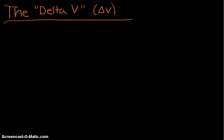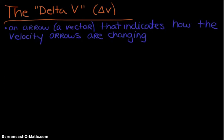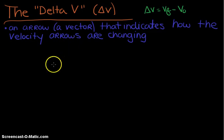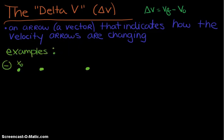Hey everyone, today we're going to talk about this quantity called Delta V, or change in velocity. Delta V is an arrow or a vector that indicates how the velocity is changing. We know that mathematically Delta V equals V final minus V initial, and Delta V is a vector and we can represent it as such.